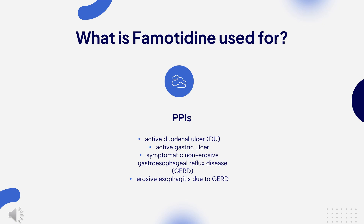Off-label uses of Famotidine include the reduction of NSAID-associated gastrointestinal effects, treatment of refractory urticaria, prevention of stress ulcer in critically ill patients, and symptomatic relief of gastritis.